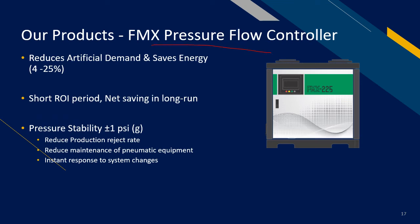We also provide pressure flow controllers for your compressed air system. It helps reduce artificial demand and saves energy anywhere between 4 to 25 percent. It also has a very short ROI period, typically one to two years. It has a pressure stability of plus or minus 1 psi, and therefore helps reduce production reject rate. It also helps reduce maintenance of pneumatic equipment and has instant response to system changes. To learn more, do check out our series titled Demand Site Management and how to achieve energy saving for your compressed air system.